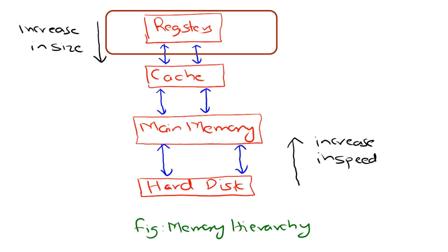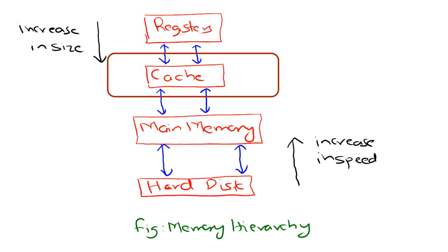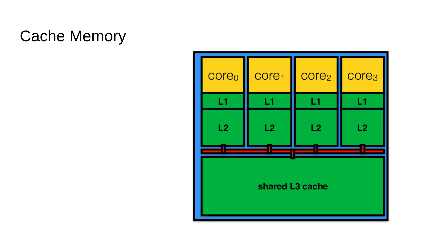Next down the line is cache memory. Think of it as the ingredients the chef keeps within arm's reach. Cache is faster and more expensive than main memory but smaller in size. Computers have multiple levels of cache — L1, L2, and sometimes L3. L1 is the fastest and smallest, closest to the CPU, while L3 is slower but larger and shared between CPU cores. The purpose of cache is to store frequently accessed data so the CPU doesn't have to wait for slower main memory.